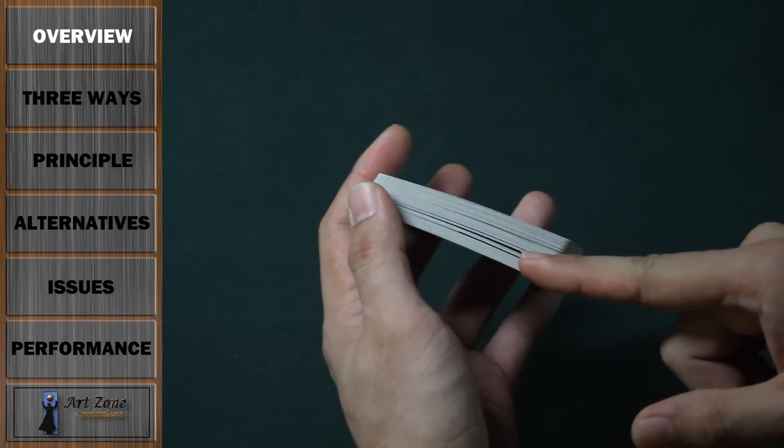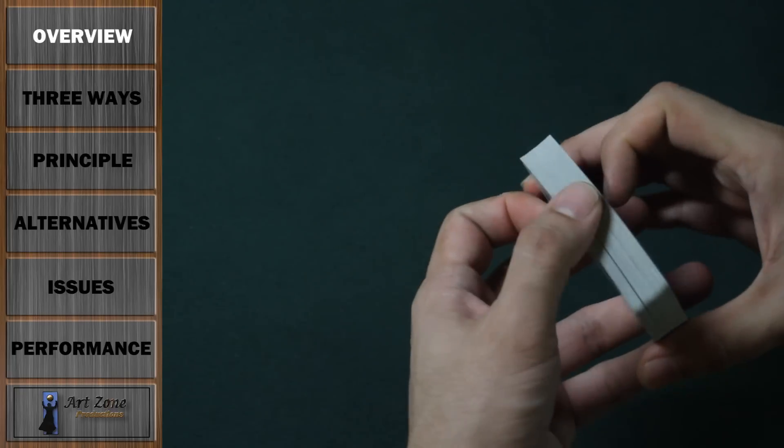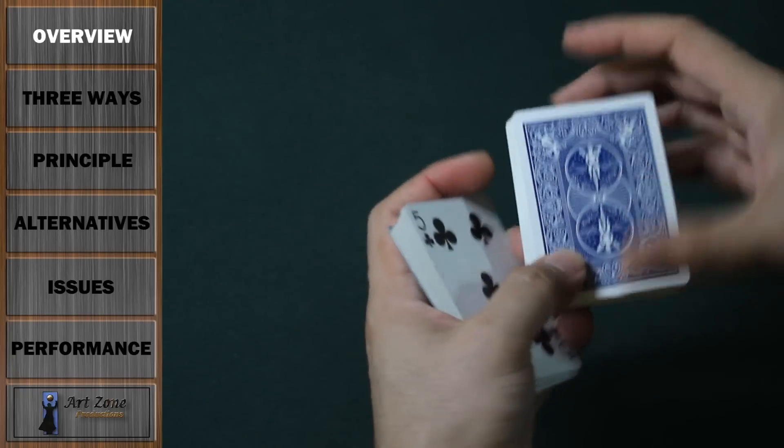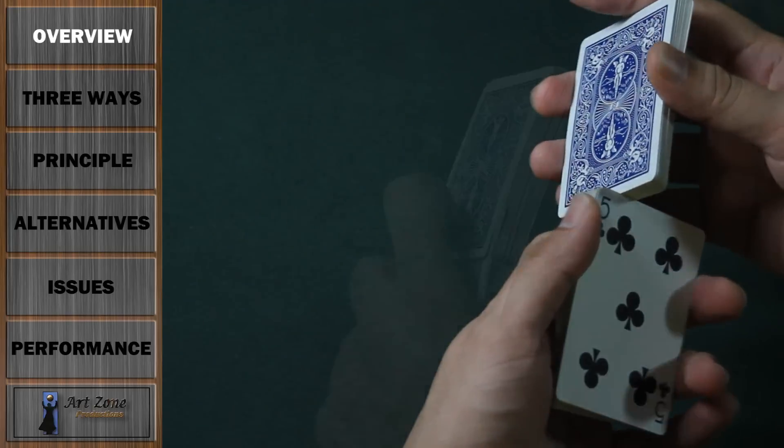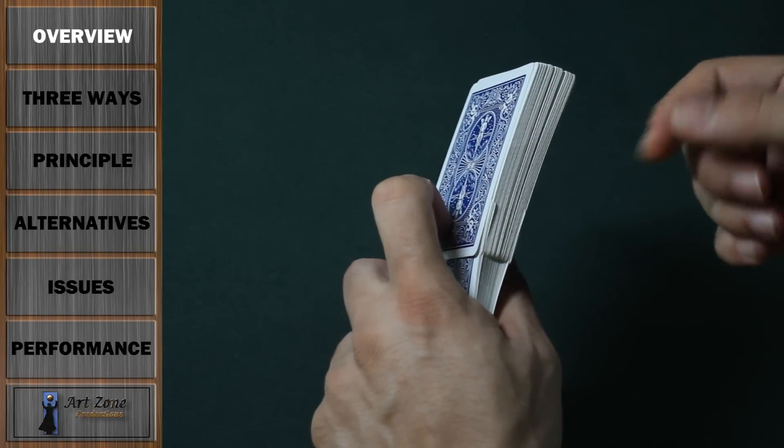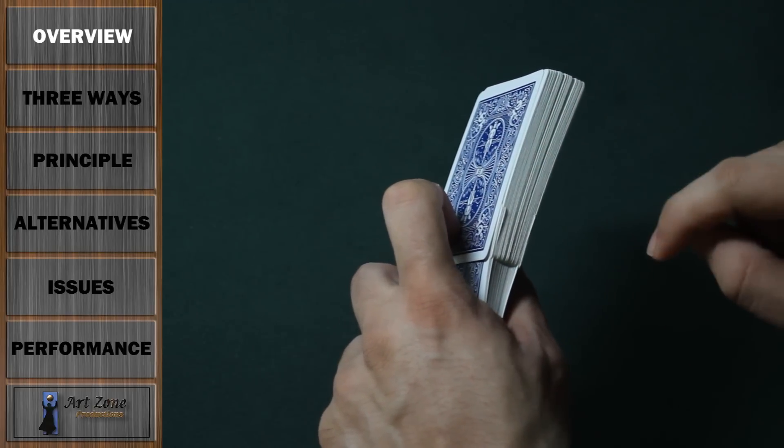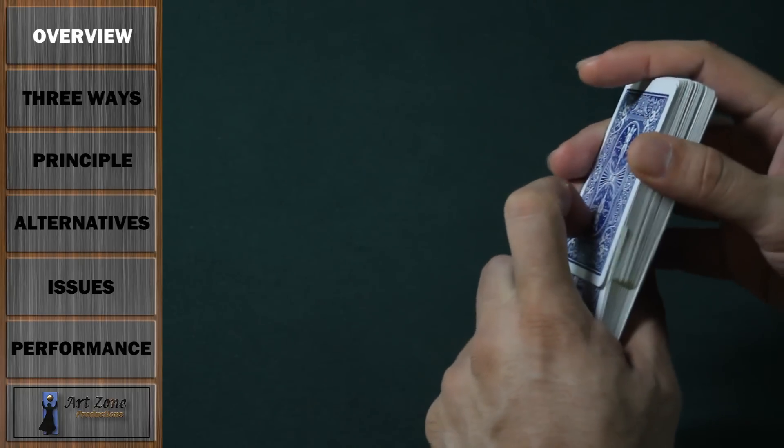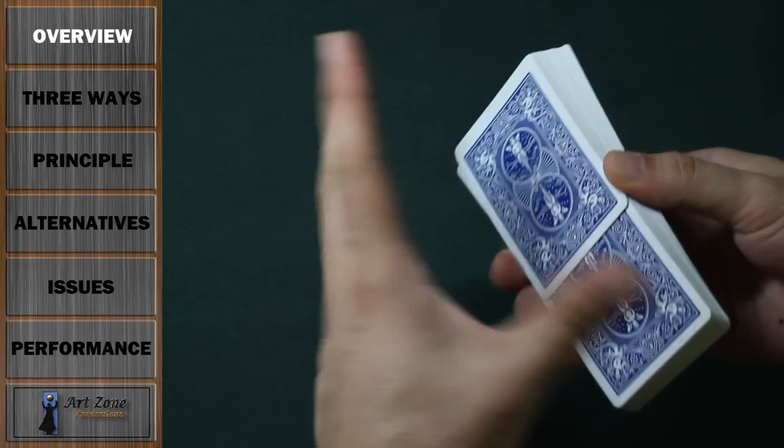As you can see, just a little slight gap right there. And then proceed to do the faro shuffle. Well, it doesn't have to be a perfect faro shuffle. You just need to place an indifferent card in between the selection and the gimmick card, right in the middle. So you don't really have to do a perfect faro shuffle throughout the whole deck.